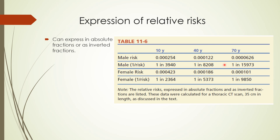This table shows the expression of relative risk for different age and gender groups for exposure to a thoracic CT scan. We can see that the risk is highest for children of any gender compared to adults of the same gender. For intergender comparisons, the risk is generally higher for females of any age compared to males of a comparable age.